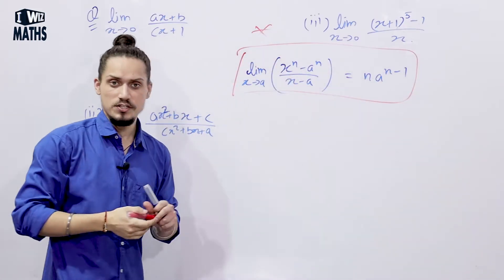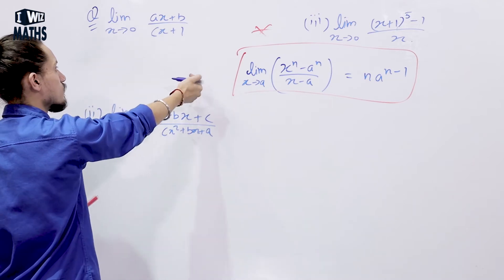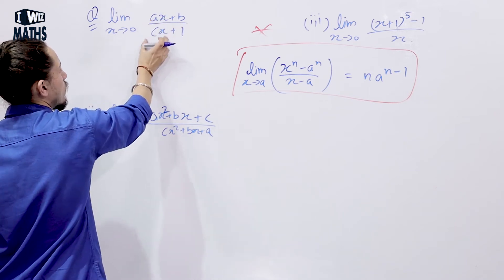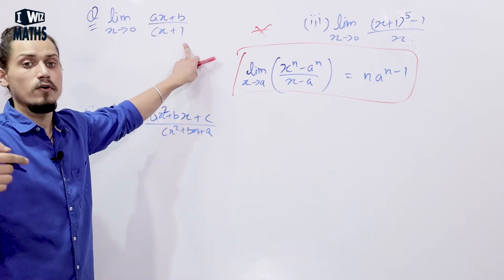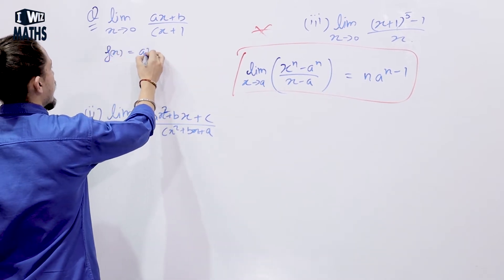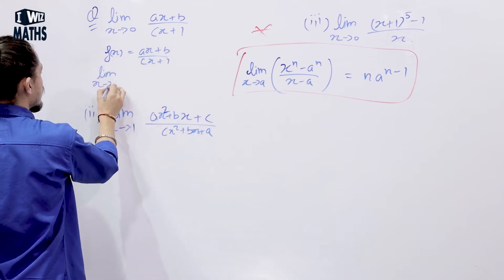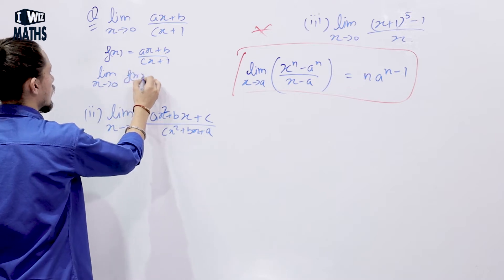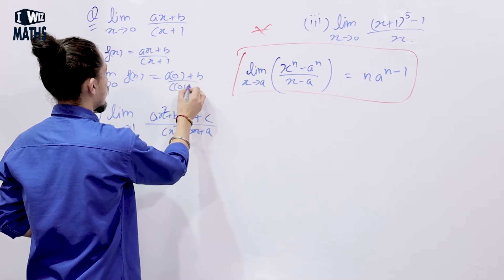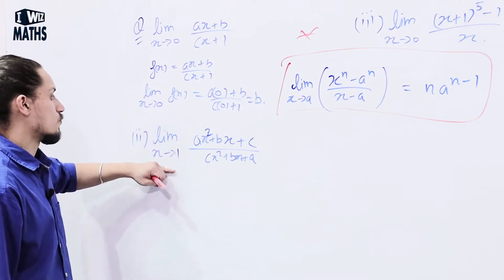First example: lim (x → 0) of (ax + b) / (cx + 1). If you put x = 0, you get (0 + b) / (0 + 1), which does not lead to 0/0. So f(x) = (ax + b) / (cx + 1), and lim (x → 0) f(x) = (a×0 + b) / (c×0 + 1) = b.